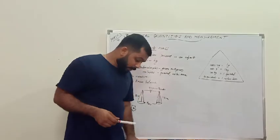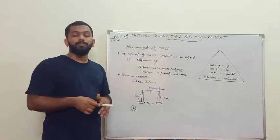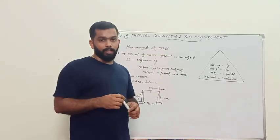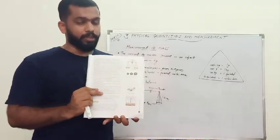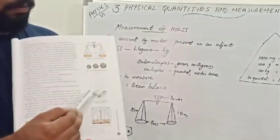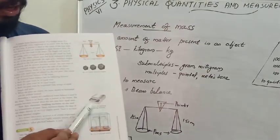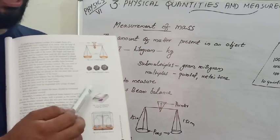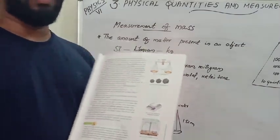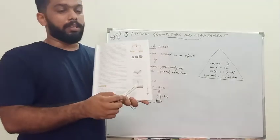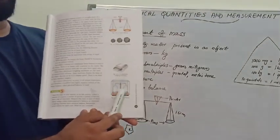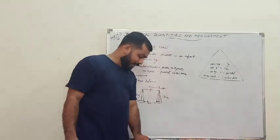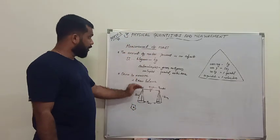Nowadays in vegetable markets, you see electronic weighing machines. In this device, you place the vegetables on the pan and the reading is displayed digitally. This is a little more accurate than the normal beam balance. There is also the physical balance, kept in chemistry labs, which can measure small amounts in milligram and gram units.